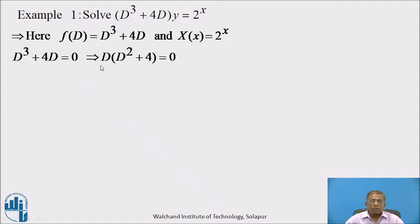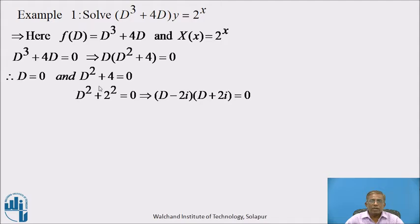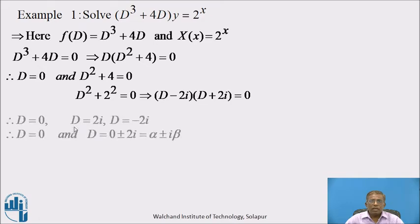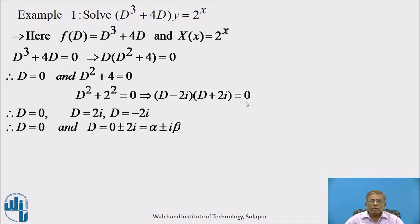We solve the auxiliary equation D³ + 4D = 0. Taking D common: D(D² + 4) = 0, giving D = 0 and D² + 4 = 0. Solving D² + 2² = 0: factors are (D − 2i)(D + 2i) = 0, so D = 2i and D = −2i. Therefore, the roots are D = 0 (real and distinct) and D = 0 ± 2i (complex conjugate pair with real part α = 0 and β = 2).